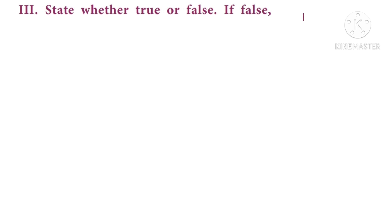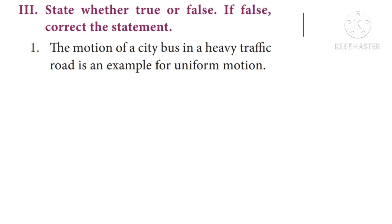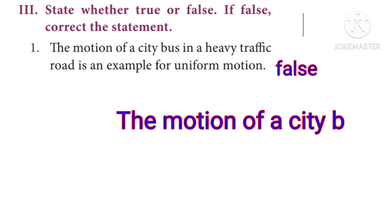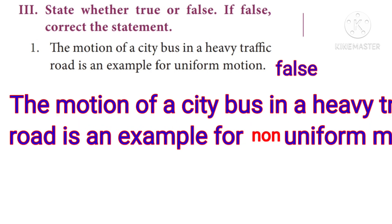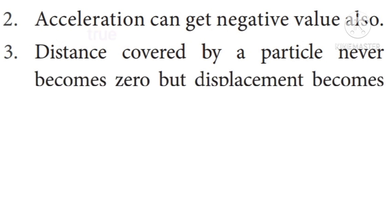Third section: State whether true or false; if false, correct the statement. Question 1: The motion of a city bus in a heavy traffic road is an example of uniform motion — this is false. Question 2: Acceleration can get a negative value also — answer: true. Question 3: Distance covered by a particle never becomes zero, but displacement becomes zero — answer: true.